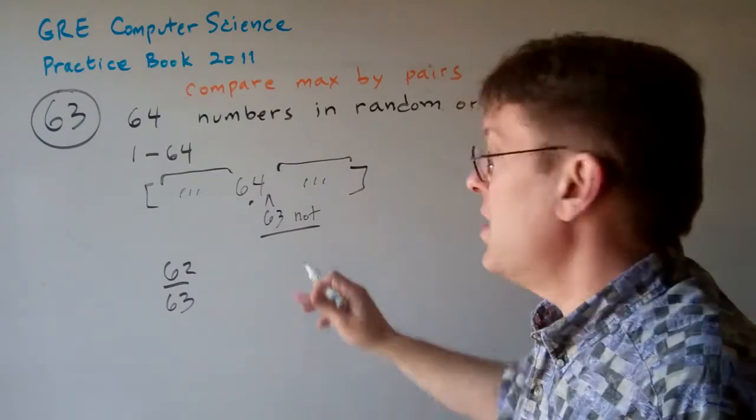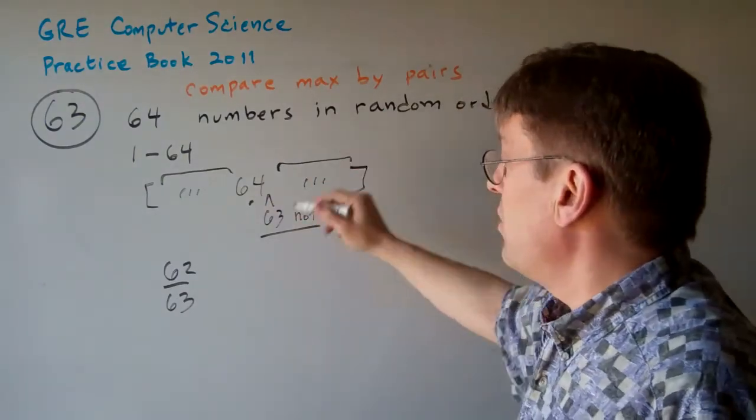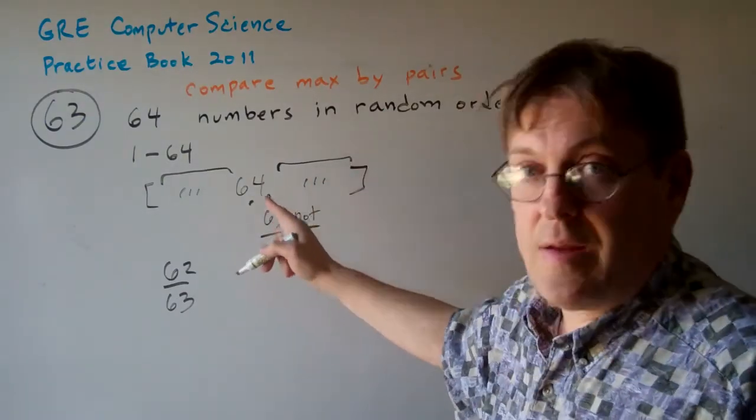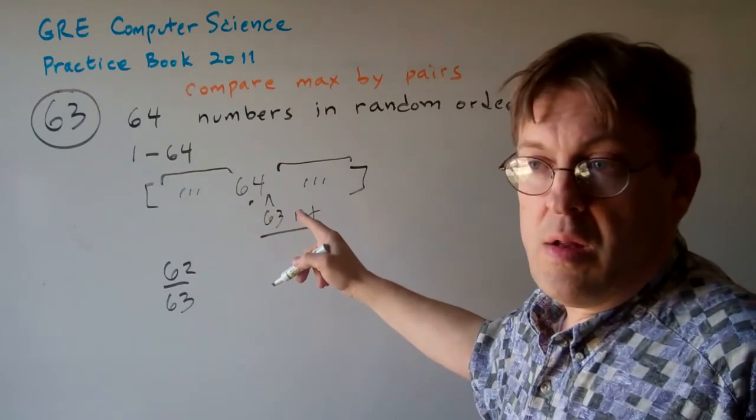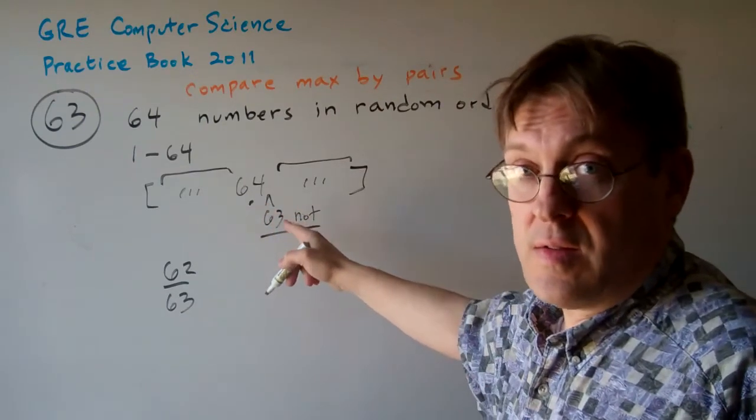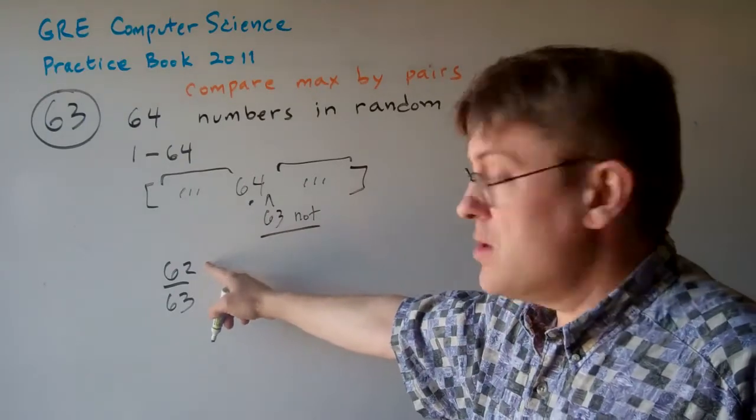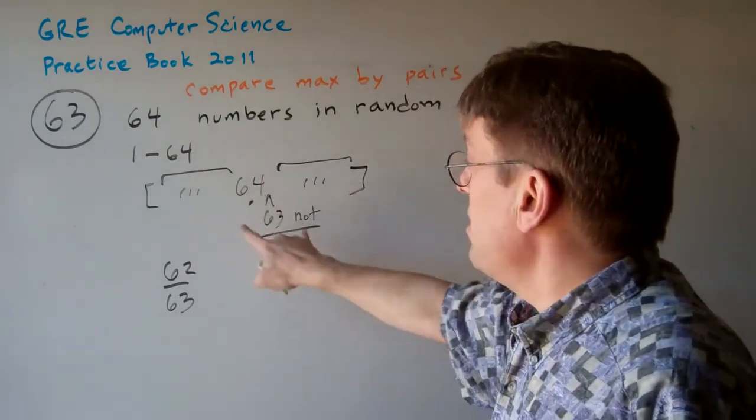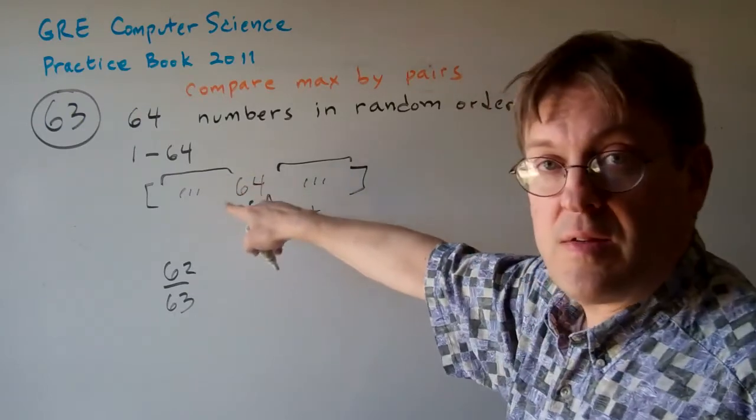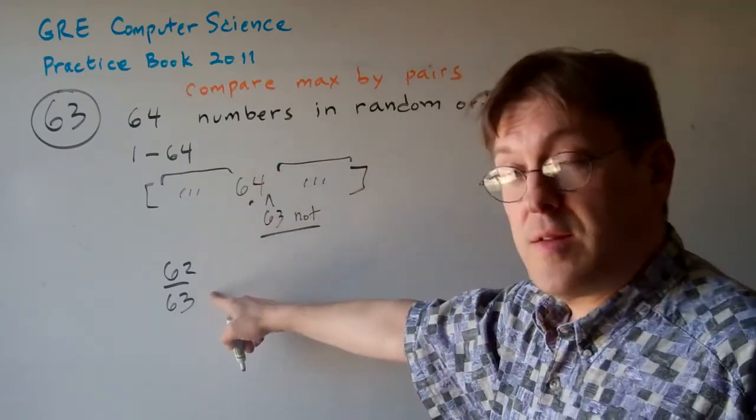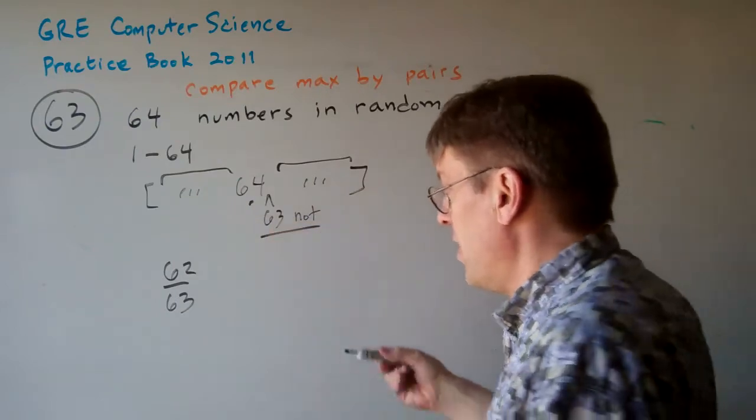There's only going to be one place in this 63 numbers that is next to 64. So there's 62 places that are not next to 64. So the chance of 63 not being next to 64 is 62 out of 63.